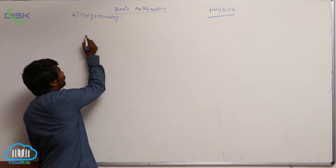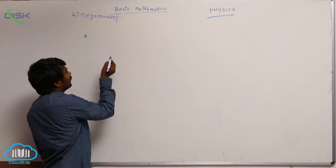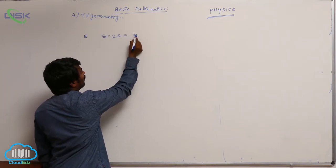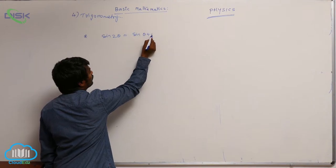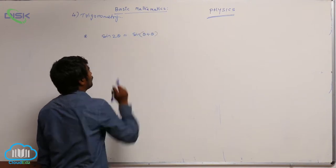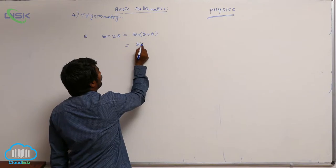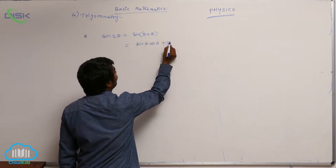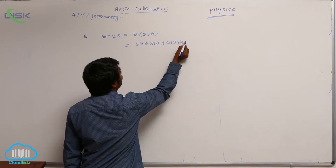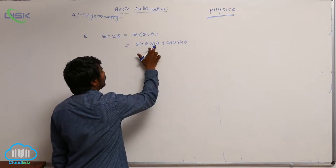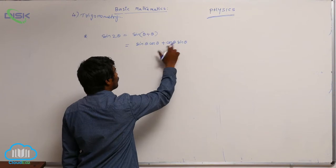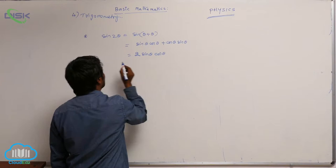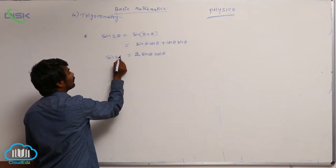Some important relations — let me derive sin 2θ. I can write it as sin(θ + θ), like sin(A + B), which gives sin A cos B + cos A sin B. So sin θ cos θ + sin θ cos θ, and what you are going to get is 2 sin θ cos θ. So sin 2θ = 2 sin θ cos θ. This is one formula.